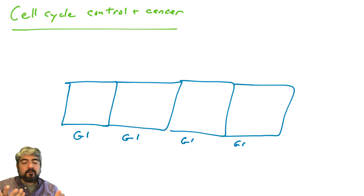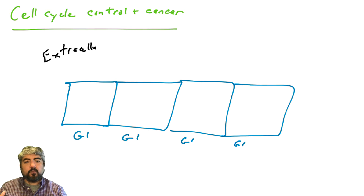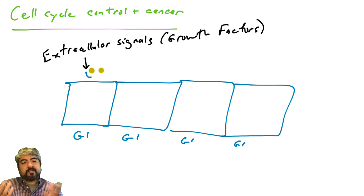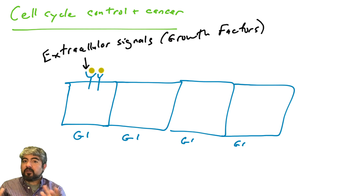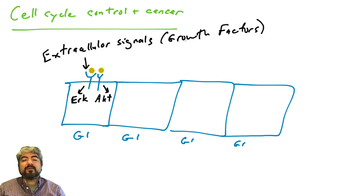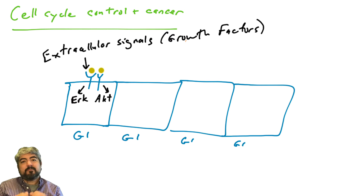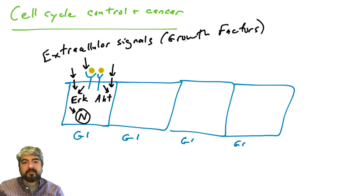When you think about the cell cycle and cell growth and division, most cells in our body are in G1 and they only go through the cell cycle when they receive signals. Typically these are extracellular signals, for example from growth factors. When these growth factors bind growth factor receptors, they transmit signals through intracellular signaling pathways, such as the RAF-MEC-ERK pathway or the PI3 kinase AKT pathway, resulting in signals being sent into the nucleus telling the cell to go through the cell cycle.